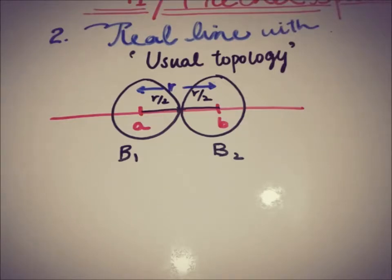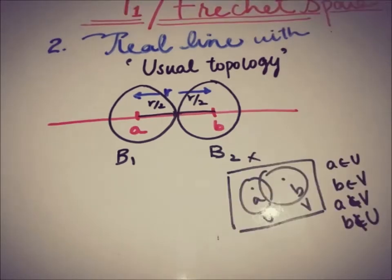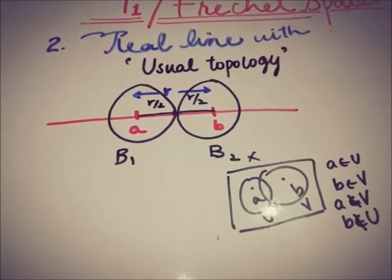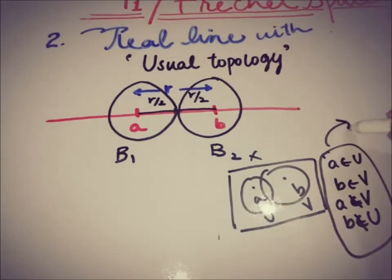To summarize: a topological space is said to be a T1 space if it satisfies the T1 axiom, which states that for any two distinct points A and B in the topological space X, there must exist open sets U and V such that A belongs to U, B belongs to V, A does not belong to V, and B does not belong to U. Note that U and V may intersect each other, but this separation condition must be fulfilled.